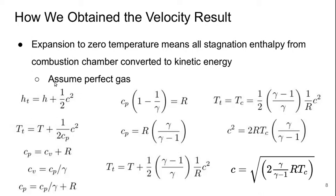So starting here on the left, this is the definition of stagnation enthalpy. Stagnation enthalpy is enthalpy plus the specific kinetic energy, or one-half c squared, where c is the velocity.